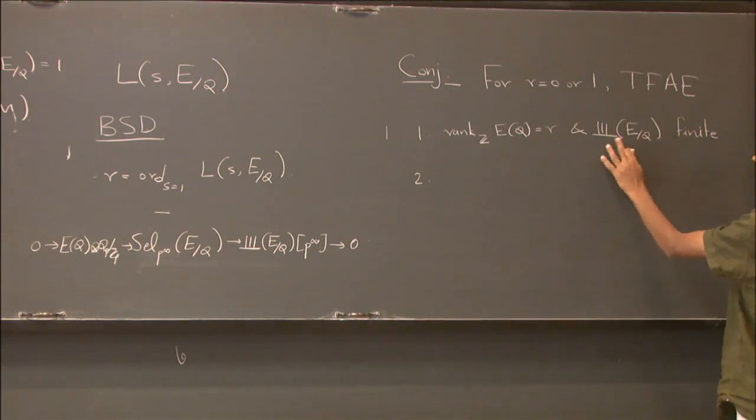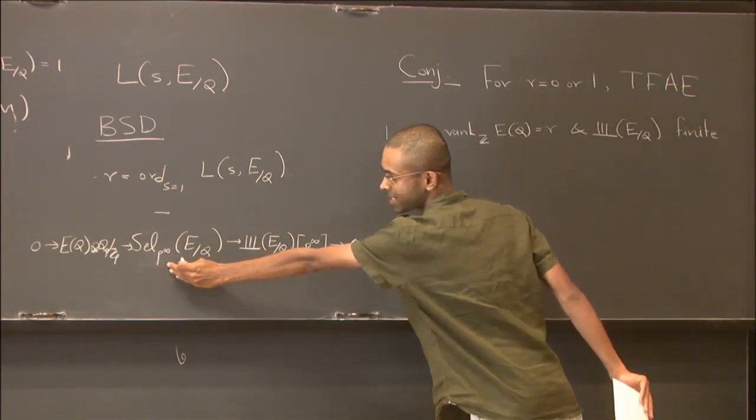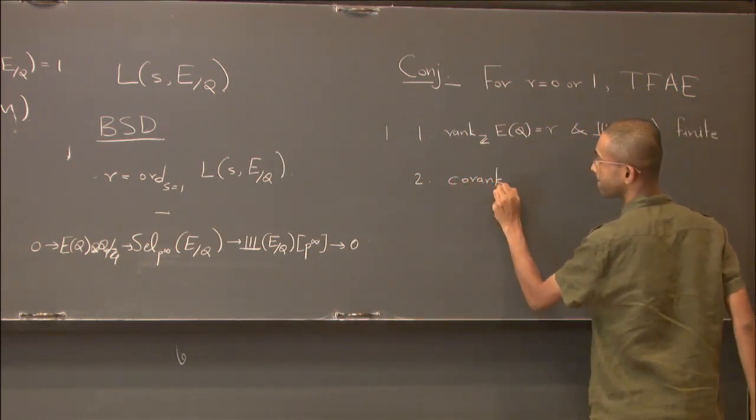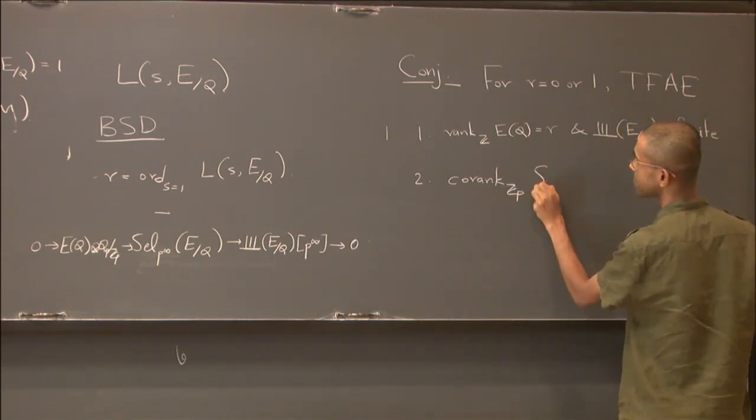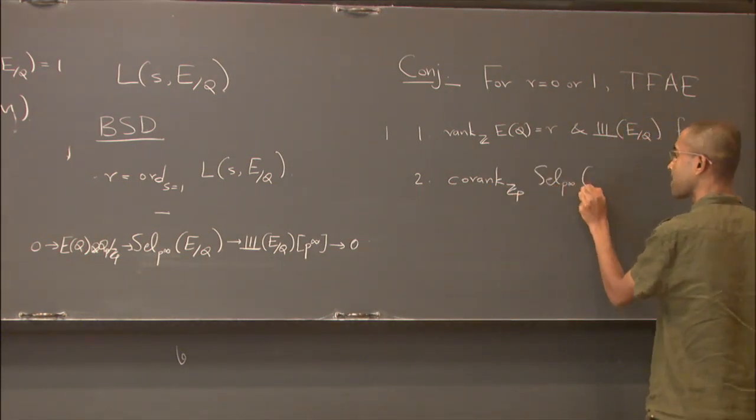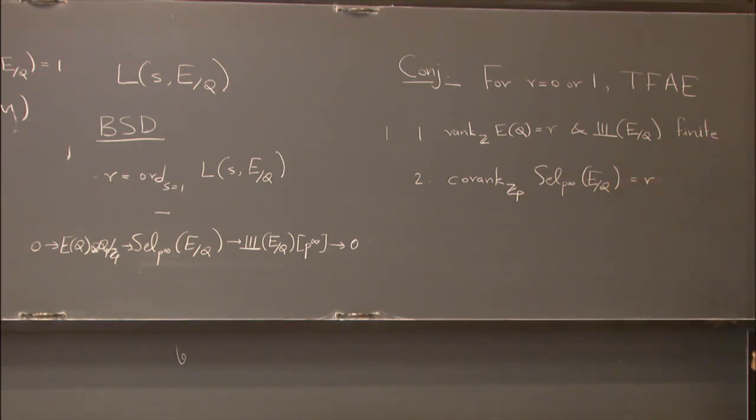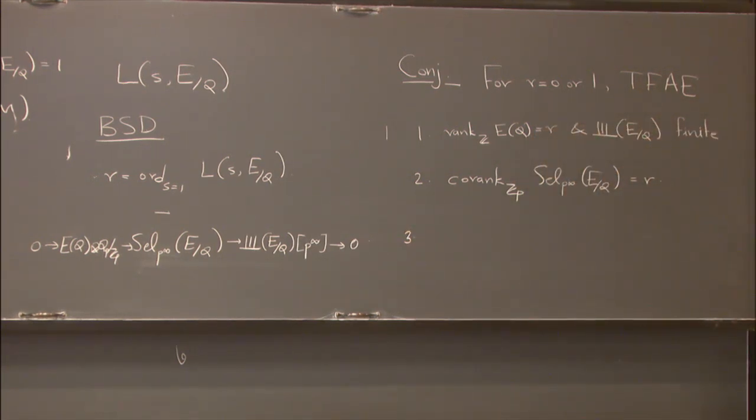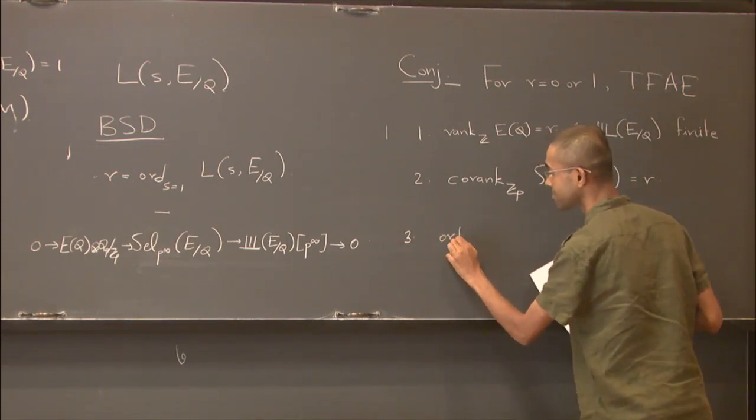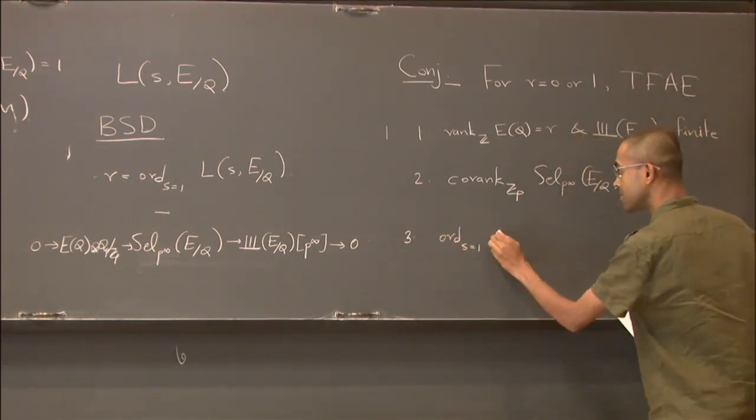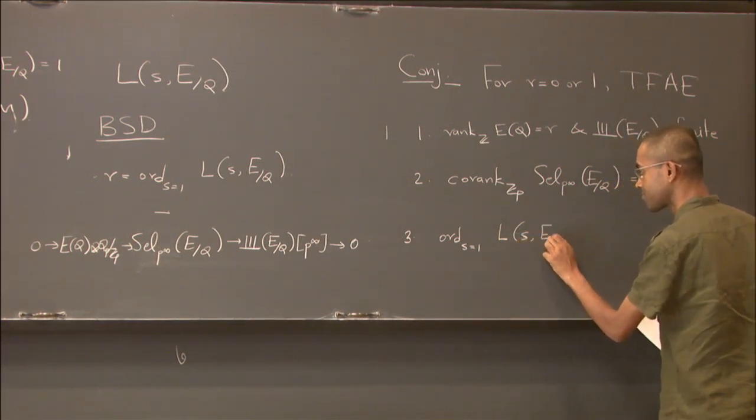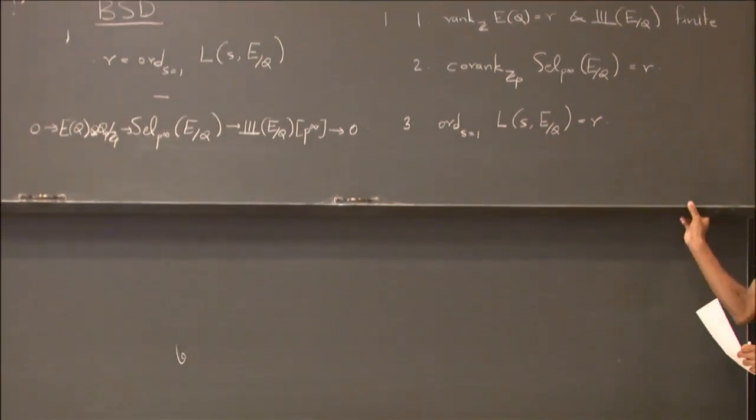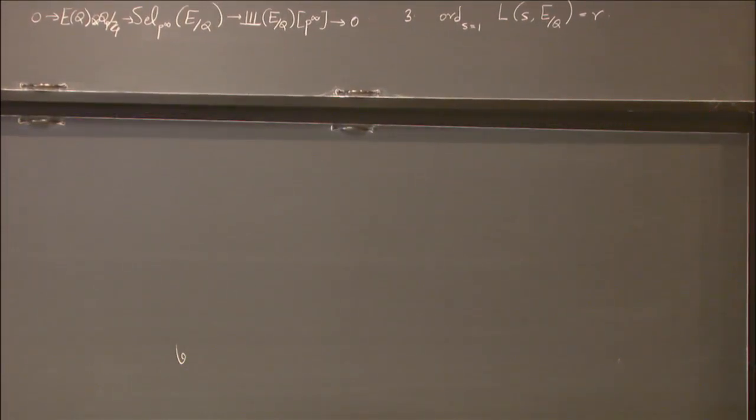The other part is, so I mean, because this is finite, so of course we expect this Selmer rank to be the same as this arithmetic rank. And the third part is this r is also the same as the analytic rank.